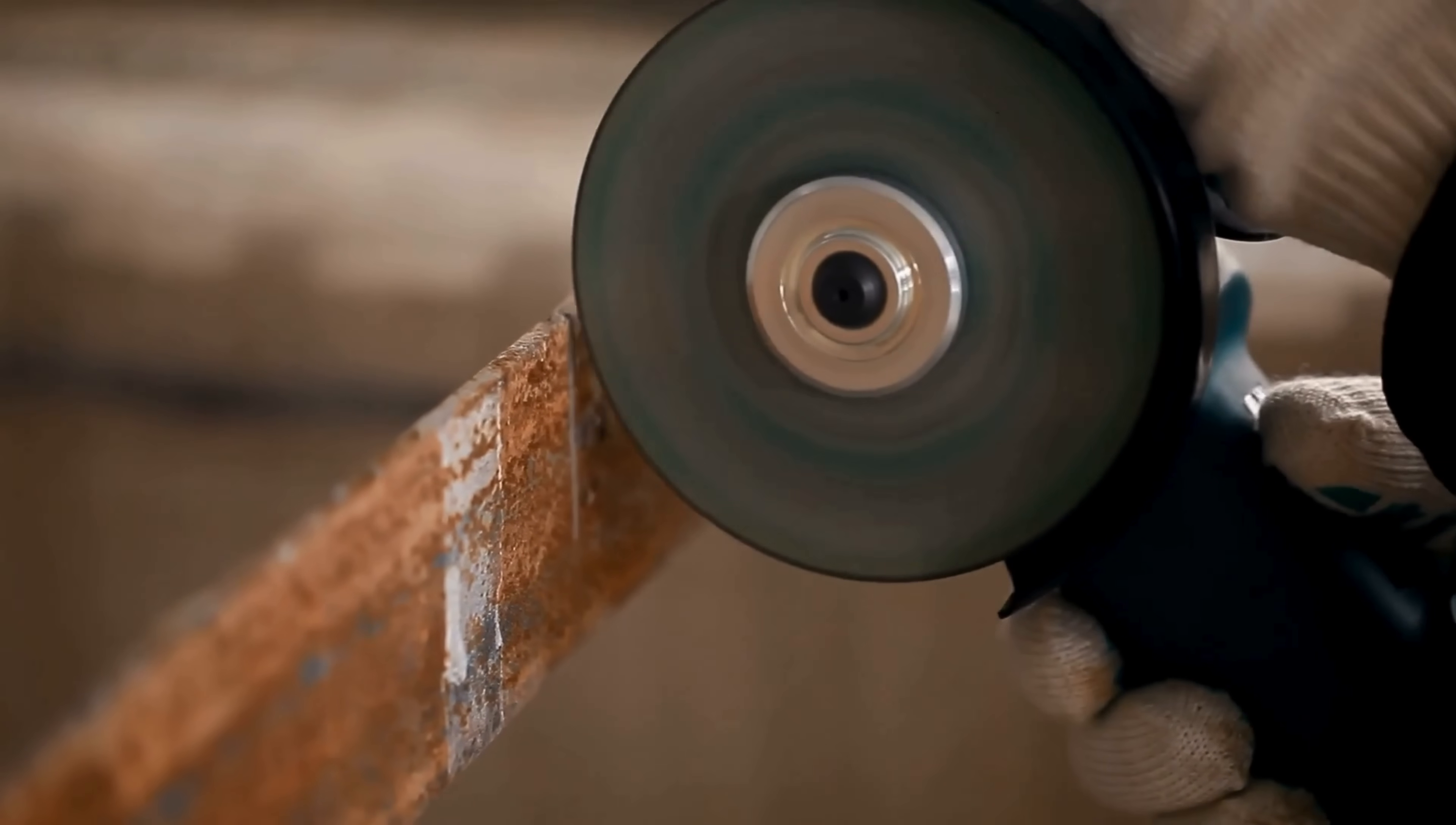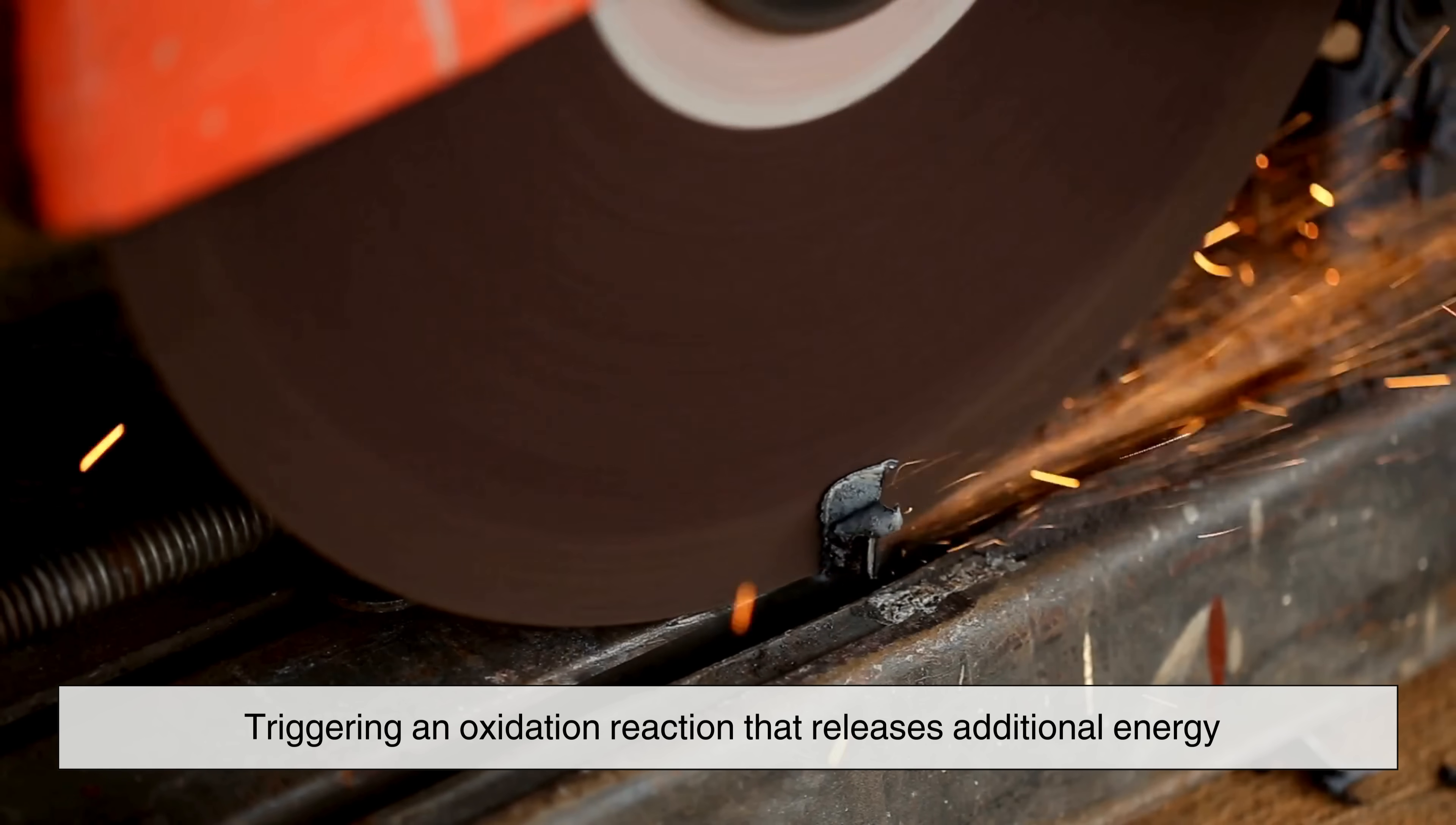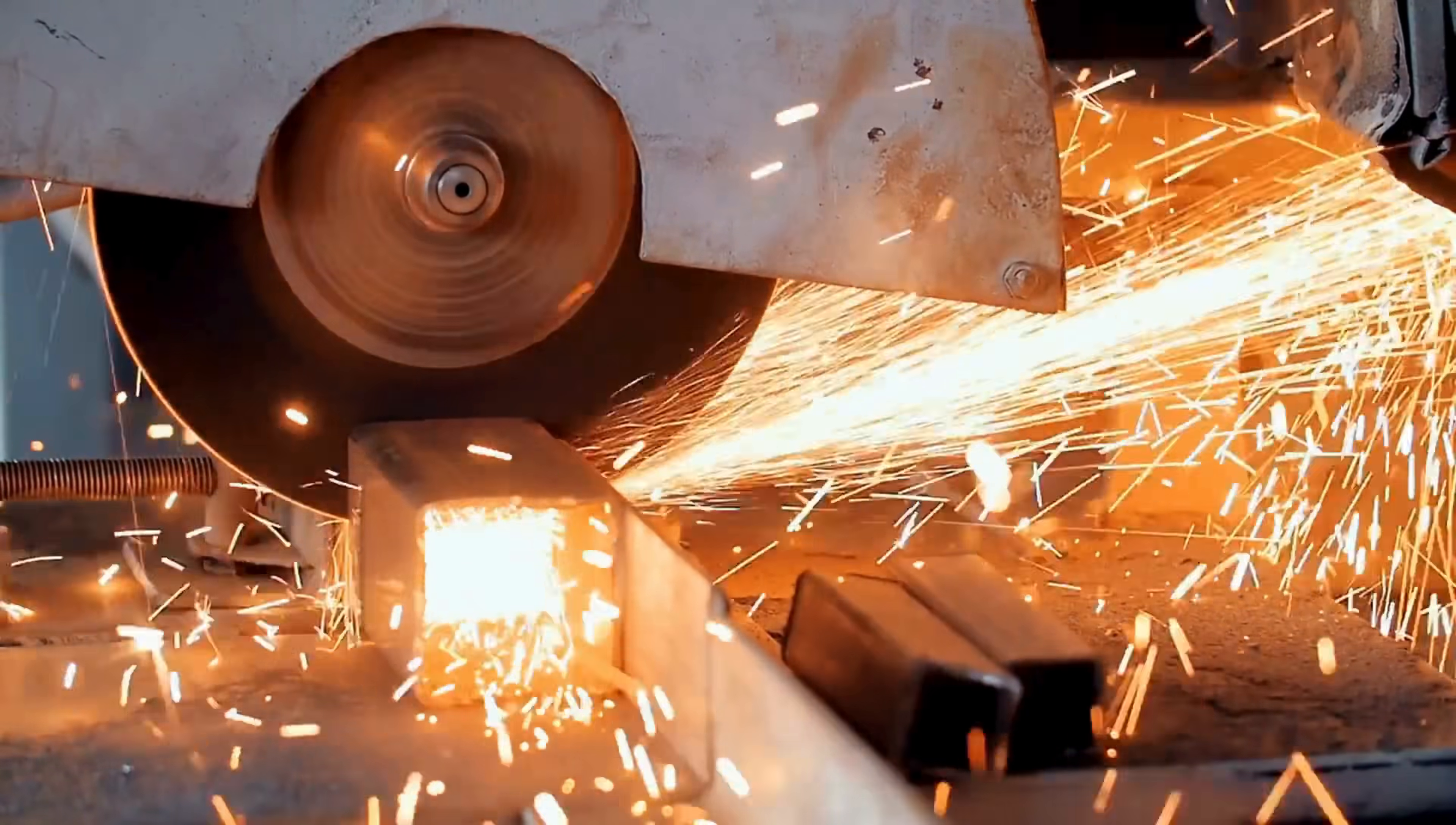Perhaps the most remarkable aspect of this phenomenon is how it showcases the fundamental principles of physics and chemistry in action. The process of grinding iron and steel transforms kinetic energy into thermal energy, triggering an oxidation reaction that releases additional energy in the form of light and heat. It is a chain reaction that occurs within milliseconds, yet it perfectly encapsulates the relationship between friction, heat, and combustion. What seems like a simple mechanical action is, in reality, a demonstration of thermodynamics and material science unfolding in real time.